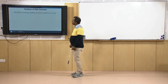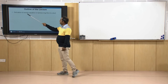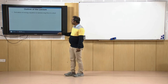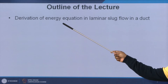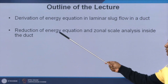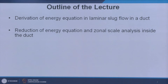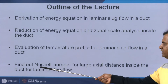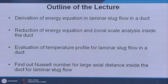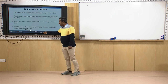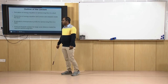The main points we will discuss in this lecture: we will start from the derivation of the energy equation, stressing on laminar slug flow. We will discuss zonal scale analysis depending on the energy equation, reducing different components into simplified form. Then we will evaluate the temperature profile for laminar slug flow in a duct, and finally discuss the Nusselt number for large axial distance — that is, in the fully developed thermal boundary region for slug flow where the velocity boundary layer is fully developed.